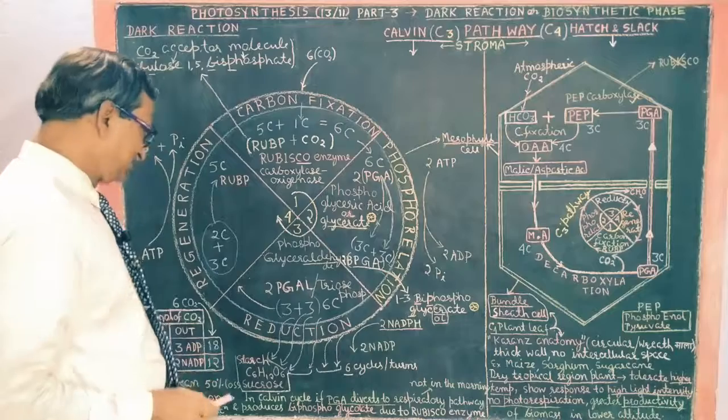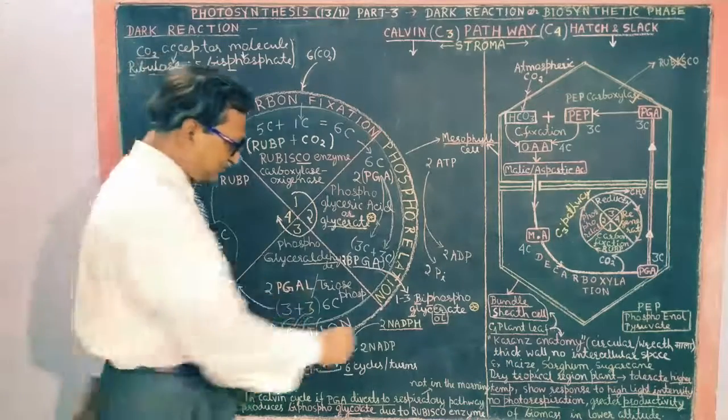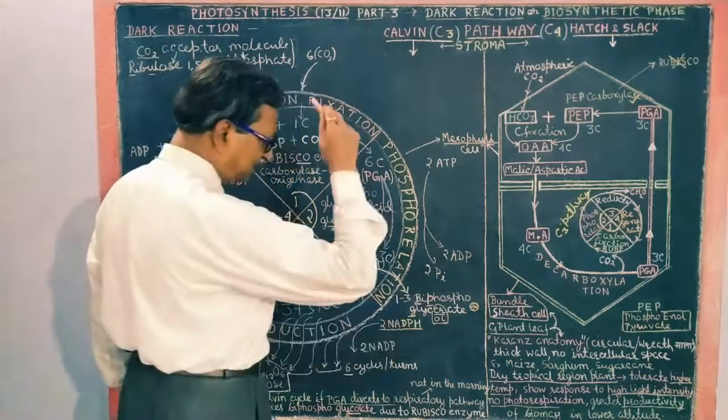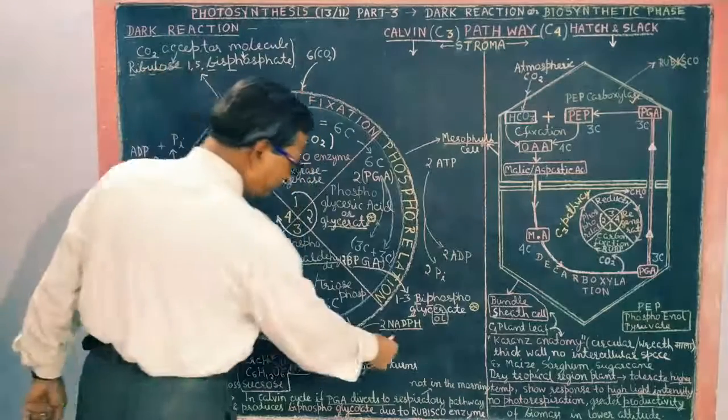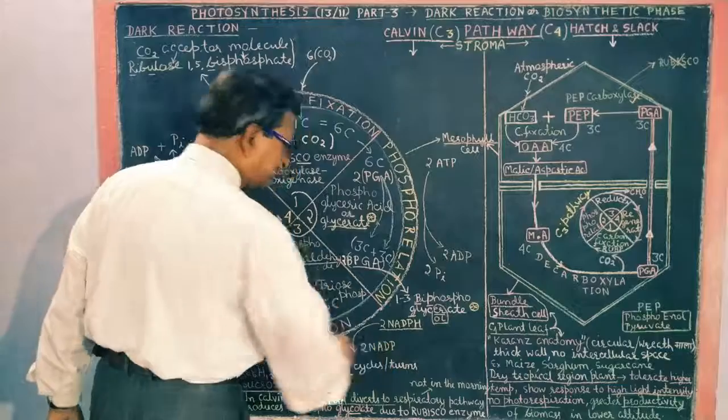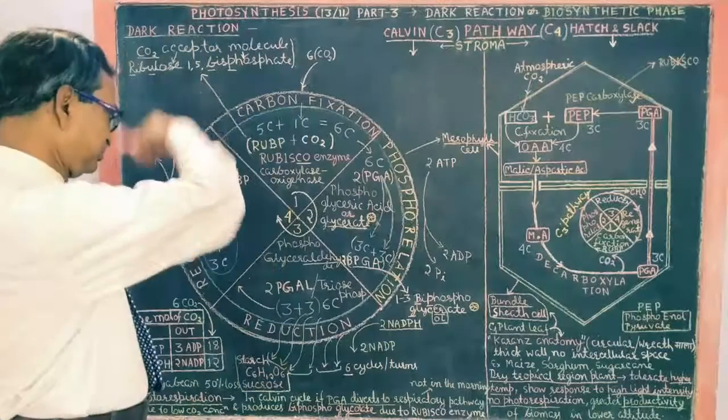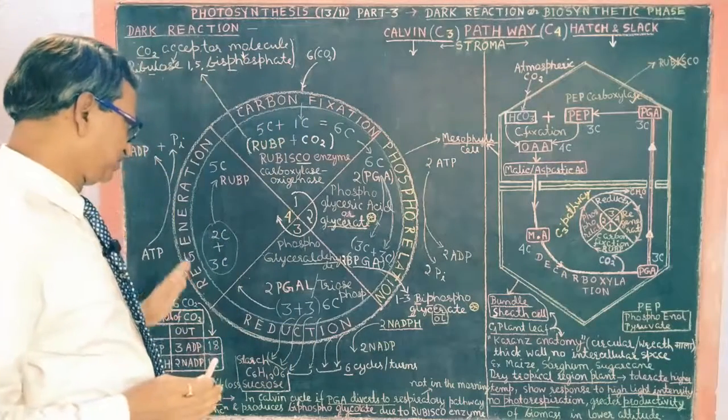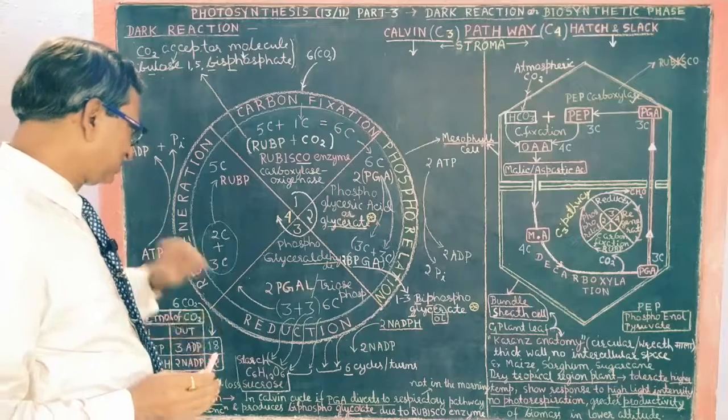Reduction process. Reduction means addition of hydrogen. Here, the NADPH that was made in the light cycle, it gets added as hydrogen here and then it comes to our original form. Then the photosynthetic, which was the light reaction, goes into it.